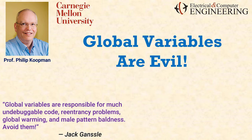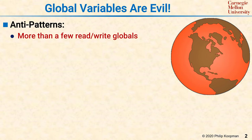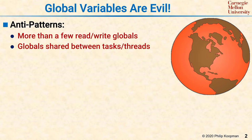Globals are variables that are visible everywhere in your software project. Three signs that you have trouble with global variables are: first, you have more than a handful of read-write globals — preferably you should have zero. Second, global variables are shared between tasks, meaning that one or more tasks can write to a global variable while other tasks read that same global. Third, variables have larger scope than they really need to.